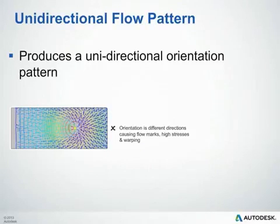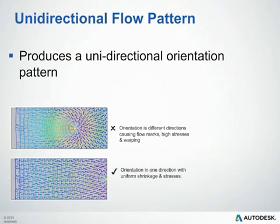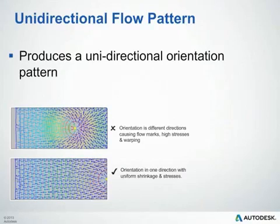The first design principle is to produce a unidirectional flow pattern when possible. When you do this, it also produces a unidirectional orientation within your part. As shown in the top image, orientation in different directions causes flow marks, high stresses, and warpage. In the image below, the orientation is in one direction with uniform shrinkage and stresses throughout the part. You can apply these principles to your parts as well.